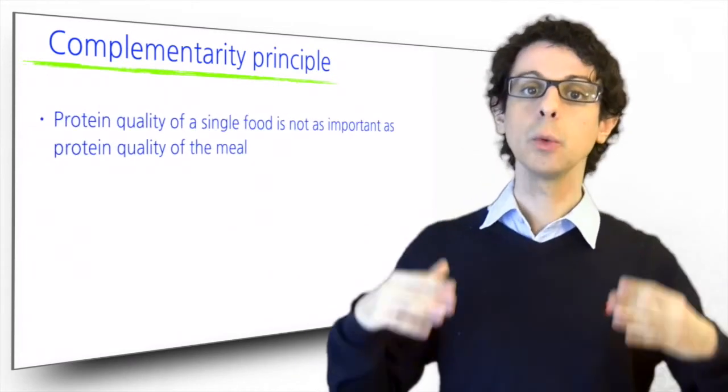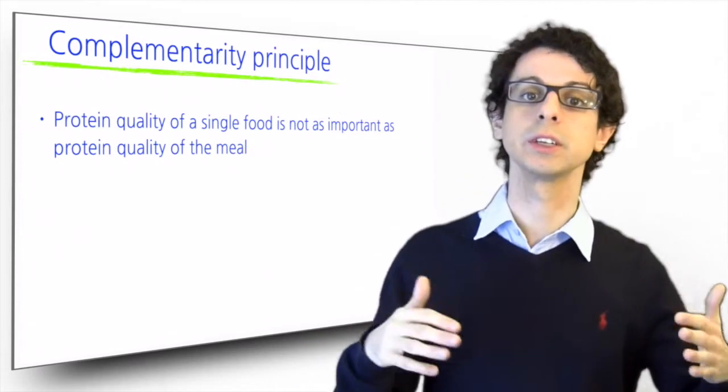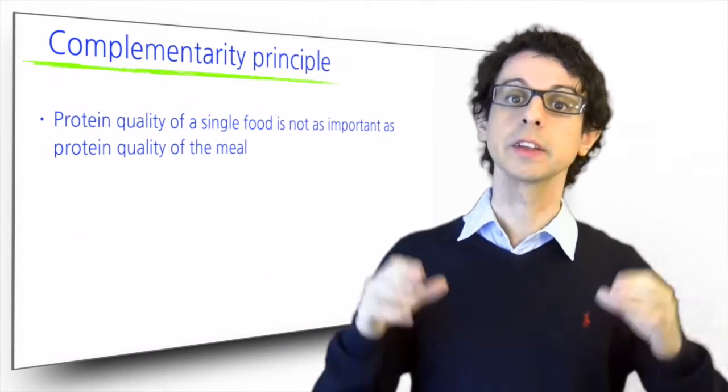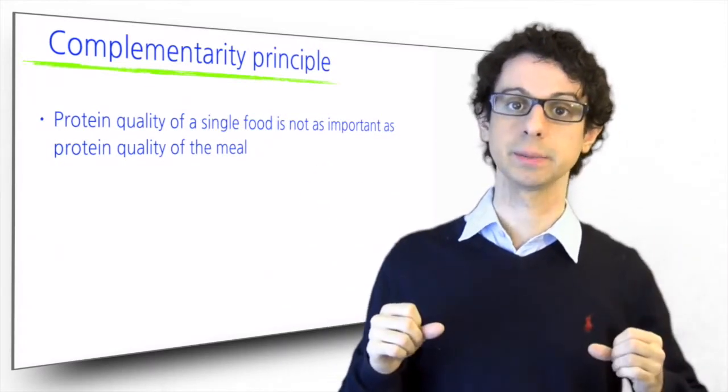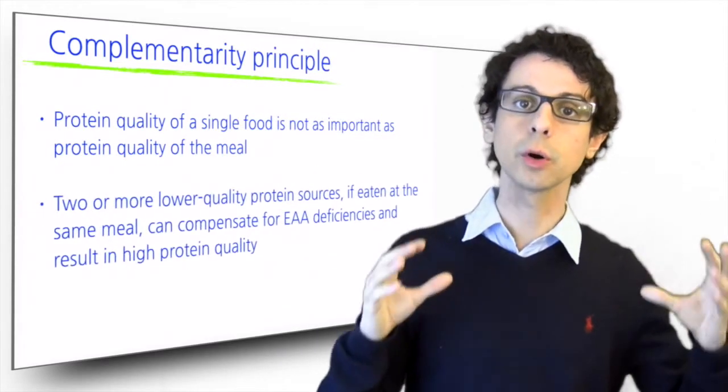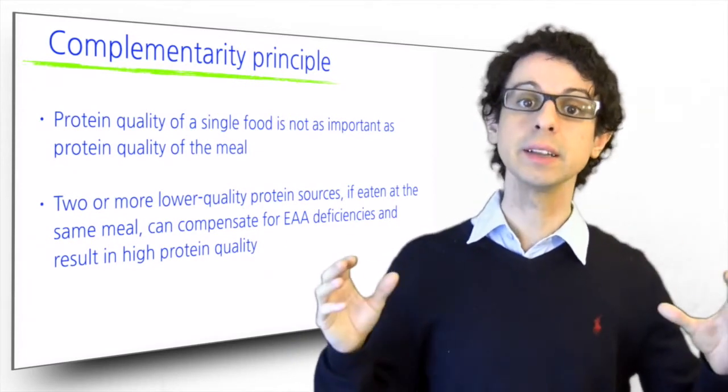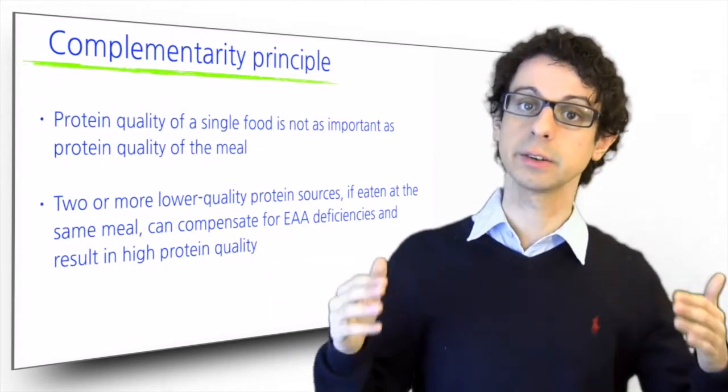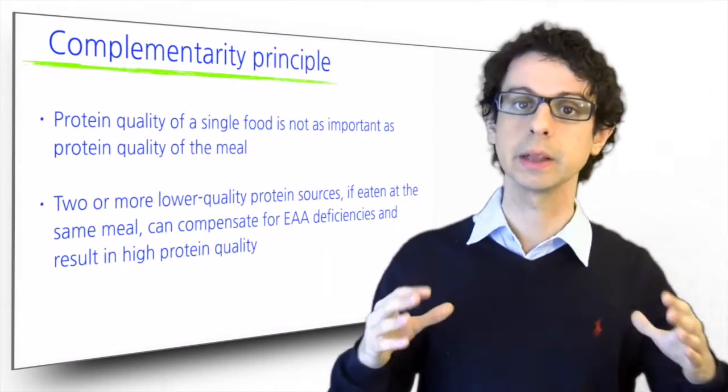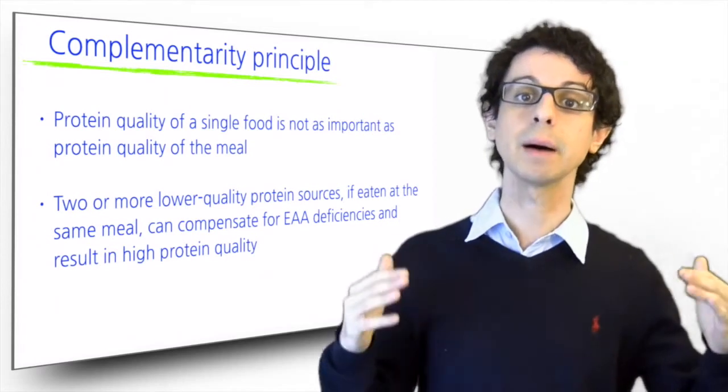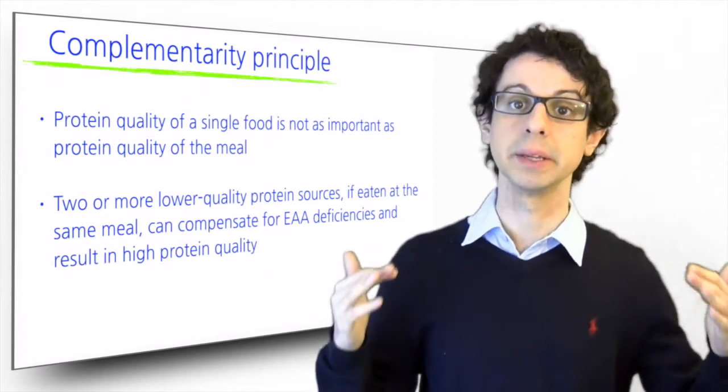When we eat, we don't really care about the protein quality of a single food. What we care about is the protein quality of the whole meal, so the combination of food that we eat. And so if we combine two or more low quality protein sources in the right way, and if we eat them together, not necessarily in the same dish but at the same meal, then we can compensate for essential amino acid deficiencies and come up with a high protein quality meal.